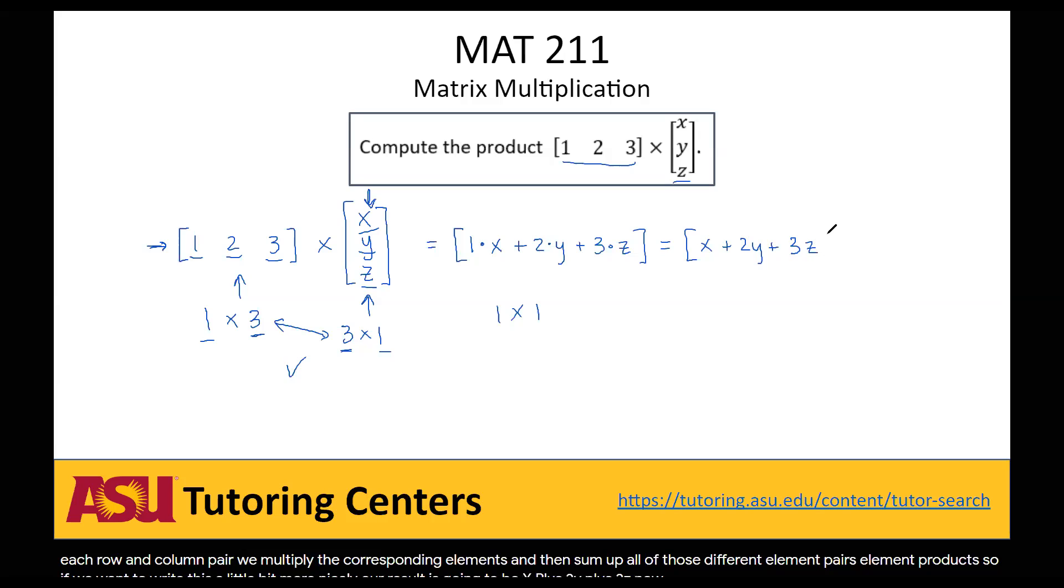Now if we had more rows and columns we'd have more entries here, but each one of them would be a sum of the corresponding products. So this guy here, this 1 by 1 matrix, because this is a 1 by 1 matrix since there's pluses in there, is going to be our solution.